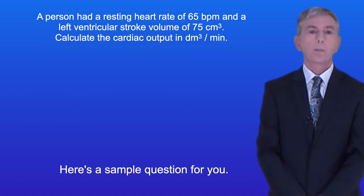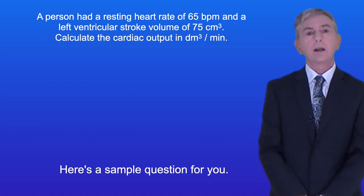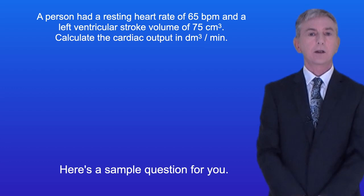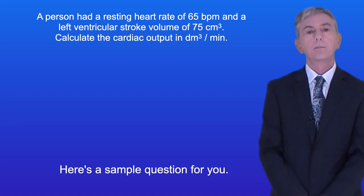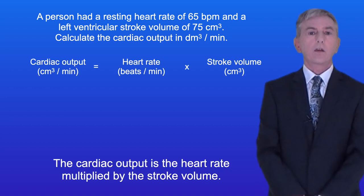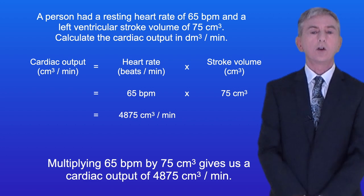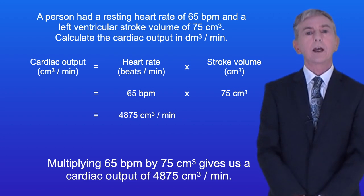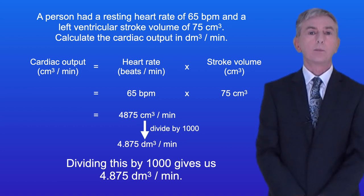Here's a sample question. A person has a resting heart rate of 65 beats per minute and a left ventricular stroke volume of 75 centimeters cubed. Calculate the cardiac output in decimeters cubed per minute. Pause the video and try this yourself. The cardiac output is the heart rate multiplied by the stroke volume. Multiplying 65 beats per minute by 75 centimeters cubed gives us a cardiac output of 4875 centimeters cubed per minute. Dividing this by 1000 gives us 4.875 decimeters cubed per minute.